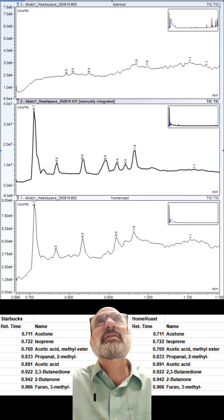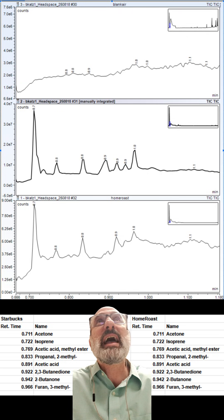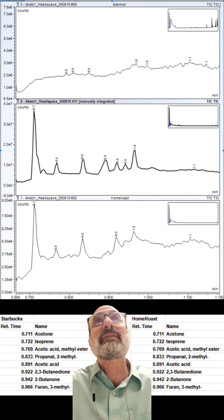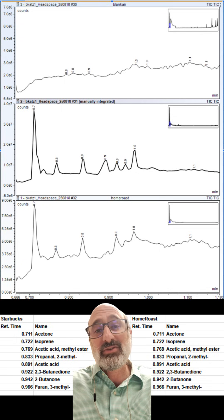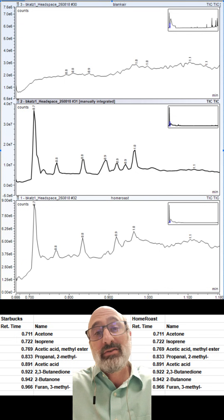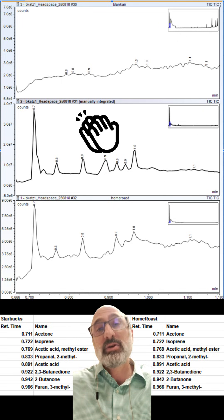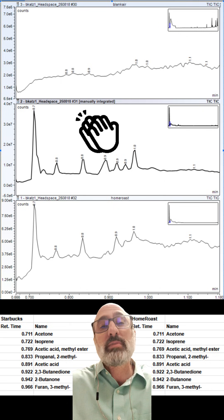We got the headspace data off the GCMS. We got the air blank on top, right in the middle we got the Starbucks decaf, and then we got the home roast on the bottom. Just to answer the question at hand, there is no DCM. I'm not seeing it.